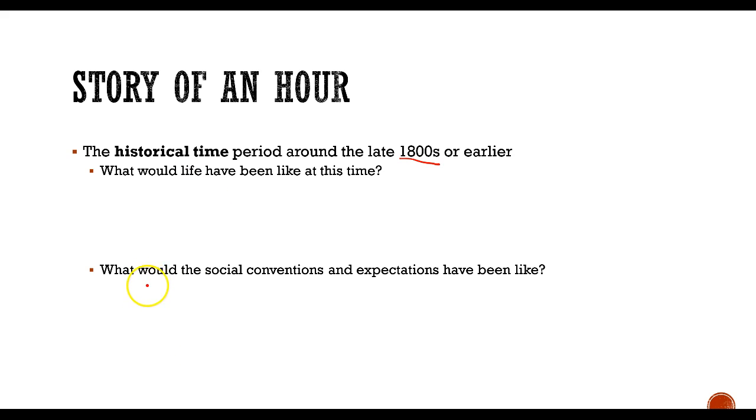And the social conventions and the social environment of this time was much different than now too. Women especially didn't have the same rights that they had today. They couldn't vote. Oftentimes, women had to stay home. They couldn't work. They were dependent on their husband in many ways. And a woman couldn't leave her husband or it would be, she would probably be ostracized by the town. And these are the sort of conditions that Mrs. Mallard was facing in story of an hour.